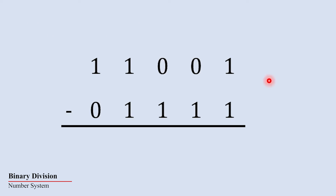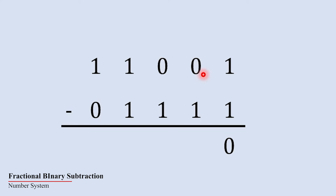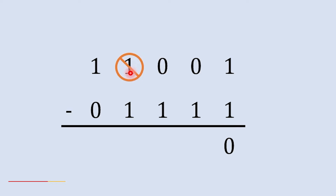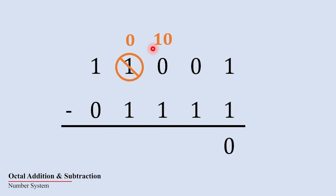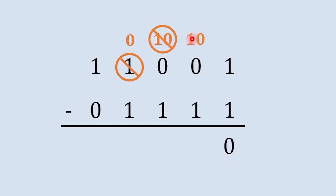Now let's subtract these two numbers starting from the rightmost column. One minus one is zero. Next, we try to subtract one from zero — not possible. The next column is also zero, so it cannot provide a borrow either. We look further left to the next column, which is one and can provide a borrow. We take borrow from that column to the zero column: it becomes one-zero and the donor column becomes zero.